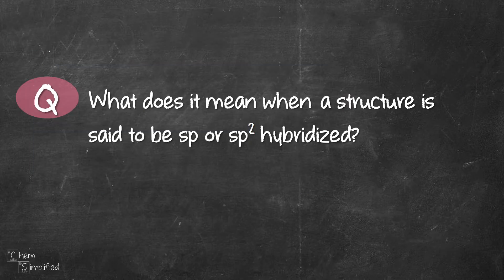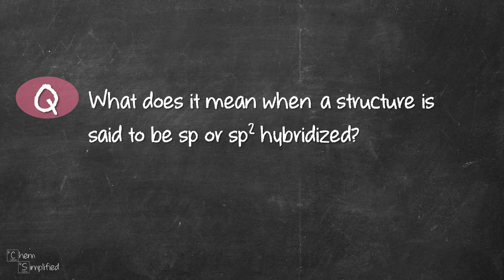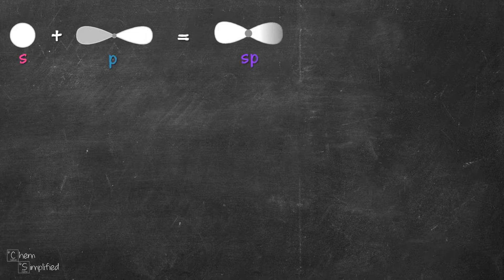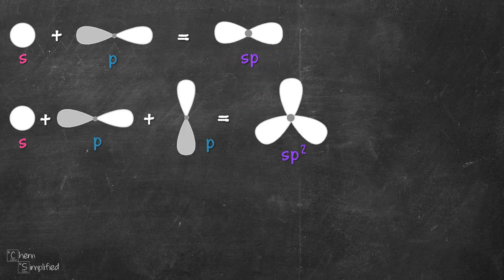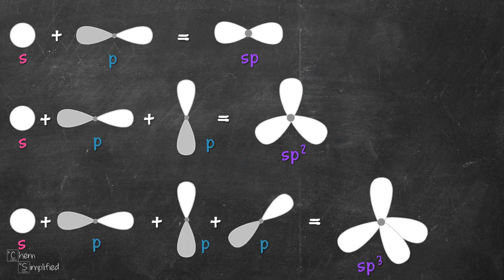Moving on to the second question, sp and sp2 are hybridized orbitals, meaning the orbitals are mixed. And what do I mean by that? Let's take 1s orbital and we mix it with 1p orbital. It will give us 2sp orbitals. If we take 1s and we mix with 2 of the p orbitals, it's going to give us 3sp2. Similarly, if we take 1s and we mix it with 3 of the p orbitals, we're going to end up with 4sp3.